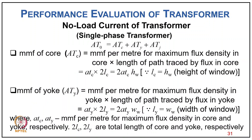The MMF for the core ATc = atc × 2Lc = 2×atc×hw, where Lc = hw is the height of the window/limb. The MMF required for the yoke ATy = aty × 2Ly = 2×aty×ww, where Ly = width of the window. Here atc and aty are the ampere-turns per meter for maximum flux density in the core and yoke respectively, and 2Lc and 2Ly are the total lengths of core and yoke.